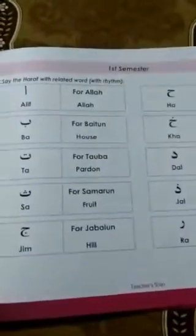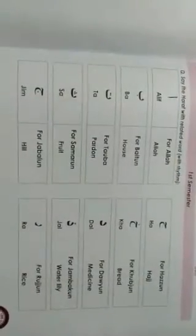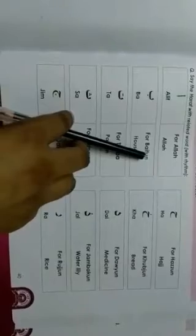I will discuss our second topic. Say the haraf with related word. Alif for Allah — Allah is only one. Ba for Baitun. Baitun means house.